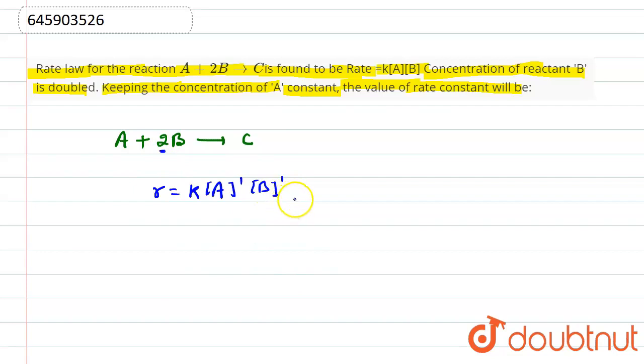So we can define this order of this reaction is 2. Now what will be the effect on rate constant? What will be the effect of rate constant when we increase the concentration of B as twice and A remains same?